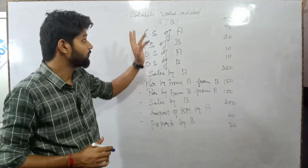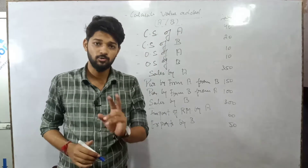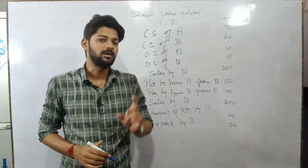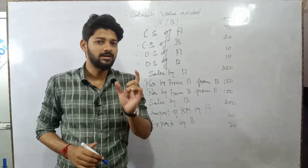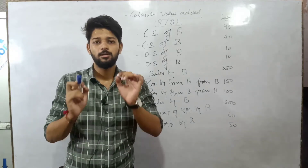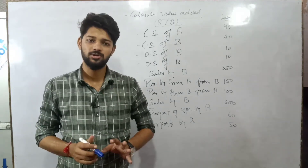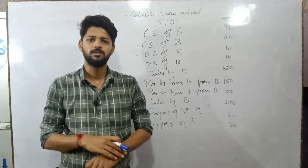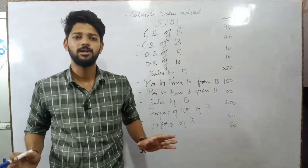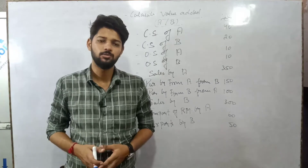We have to calculate value added by Firm A and Firm B. There are two firms — Firm A and Firm B — and we have to calculate value added by each one of them. Whether you study production method, income, or expenditure method, it's quite easy. You don't have to take any burden or tension. Everything will be made clear.